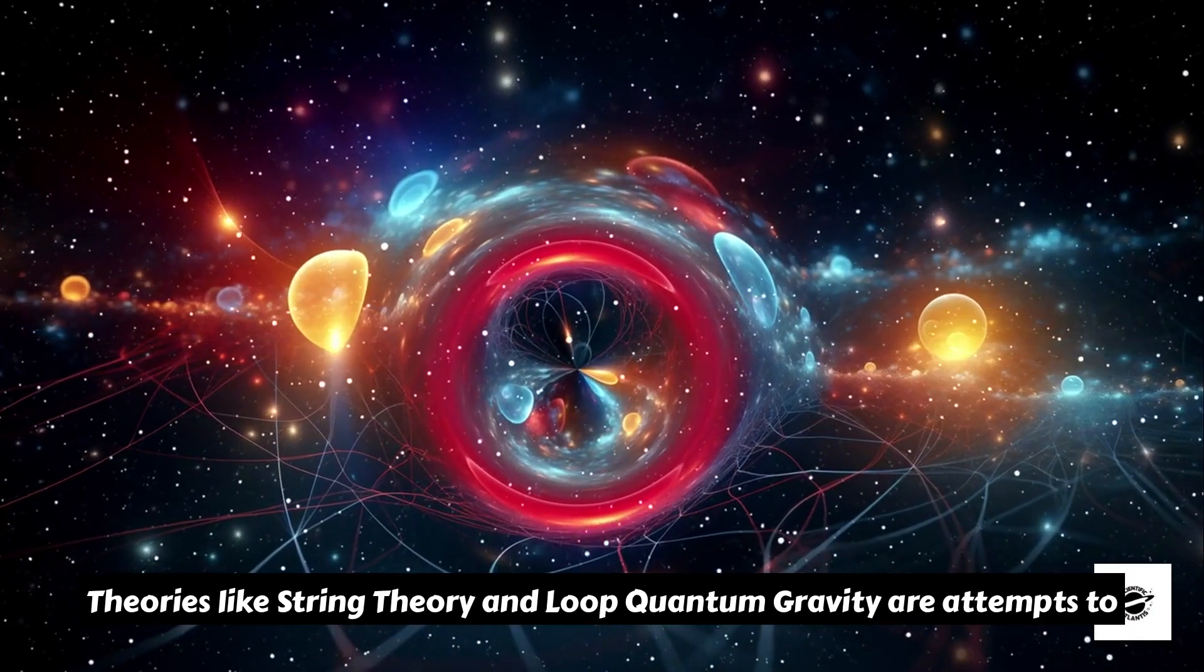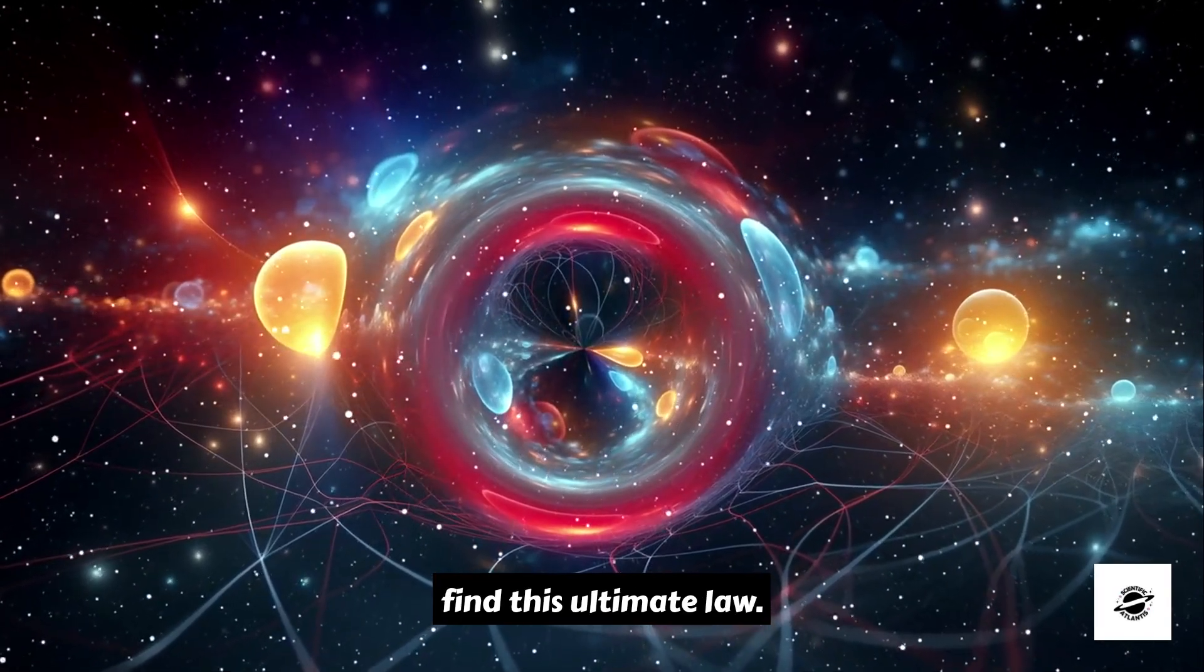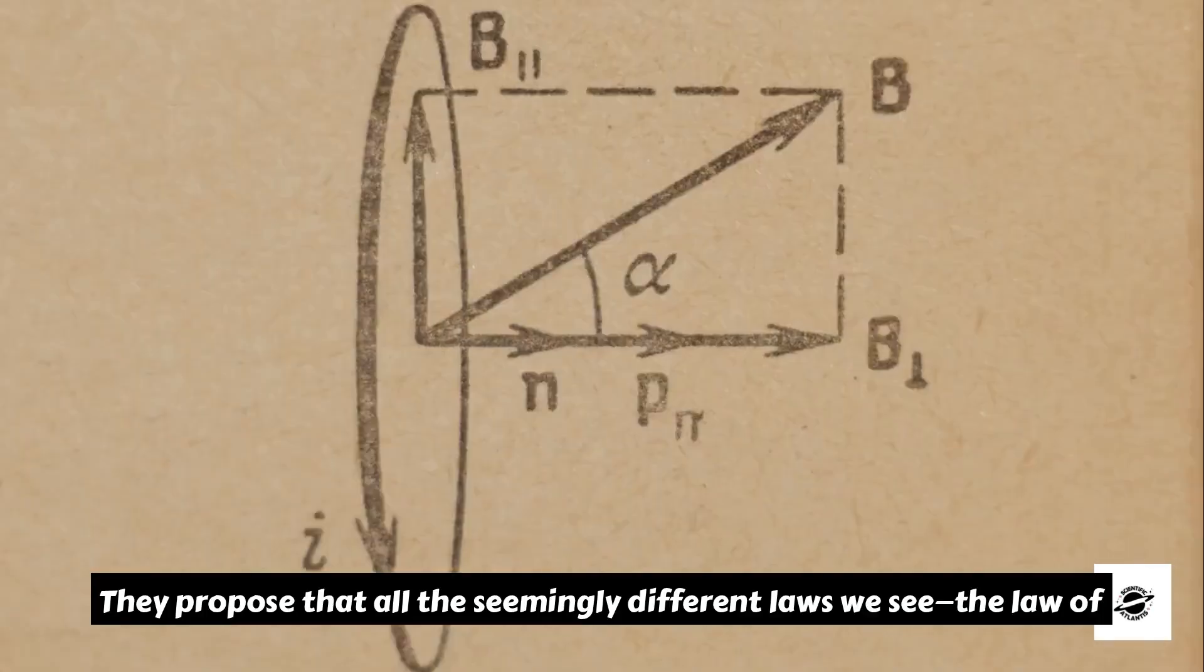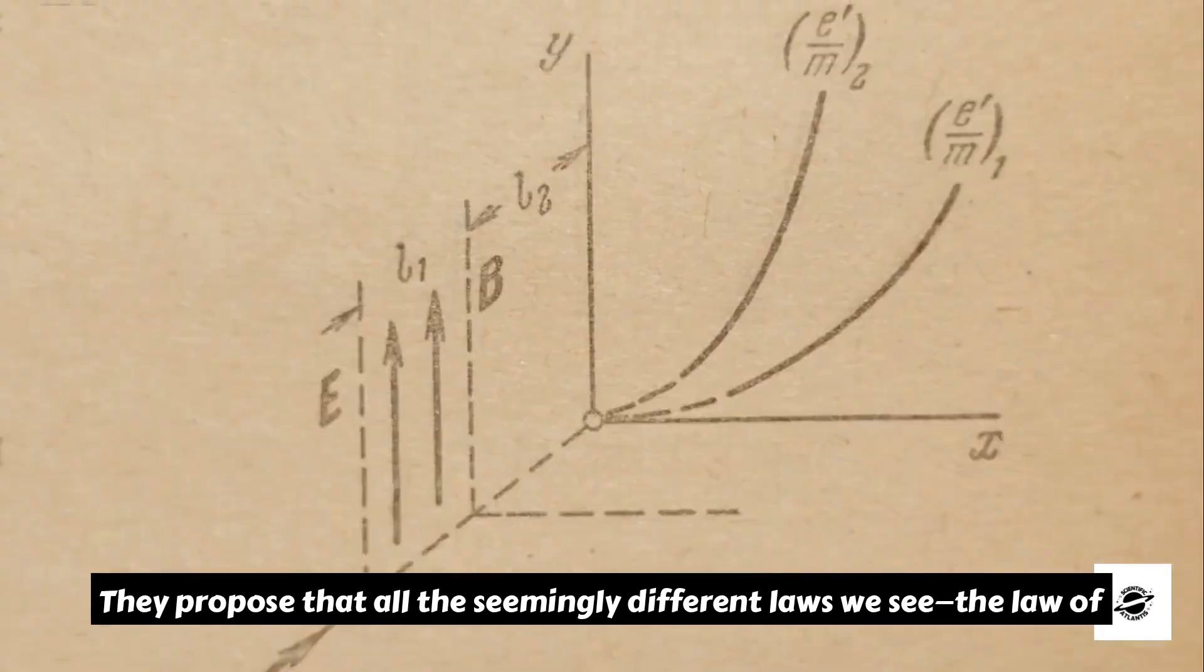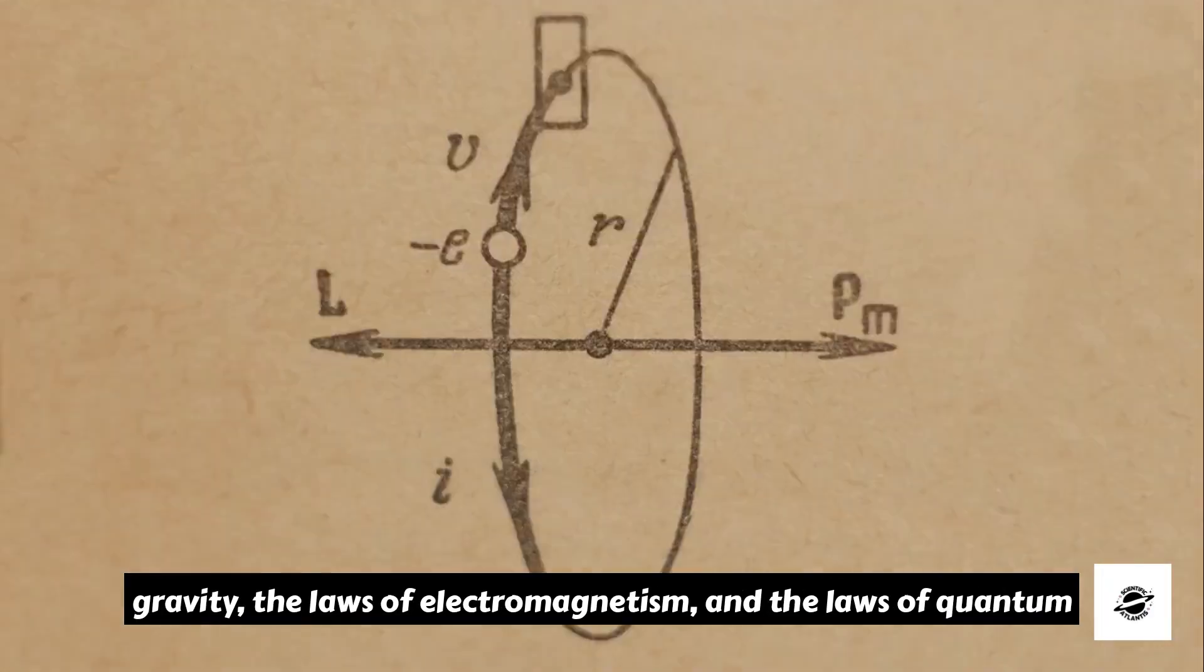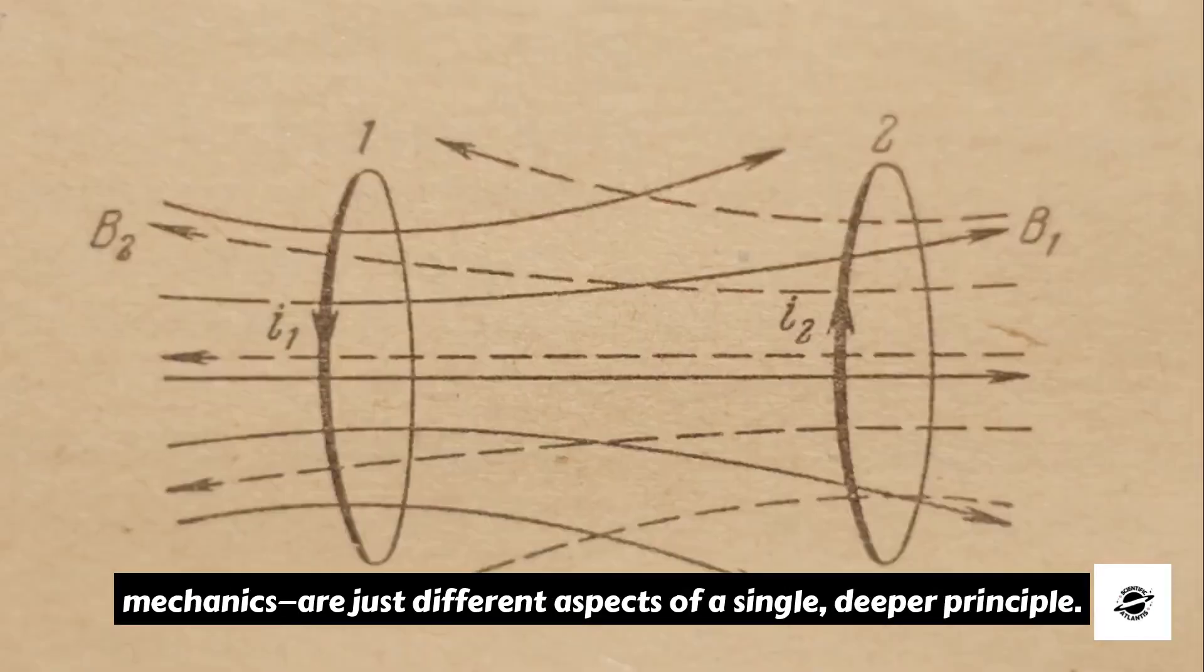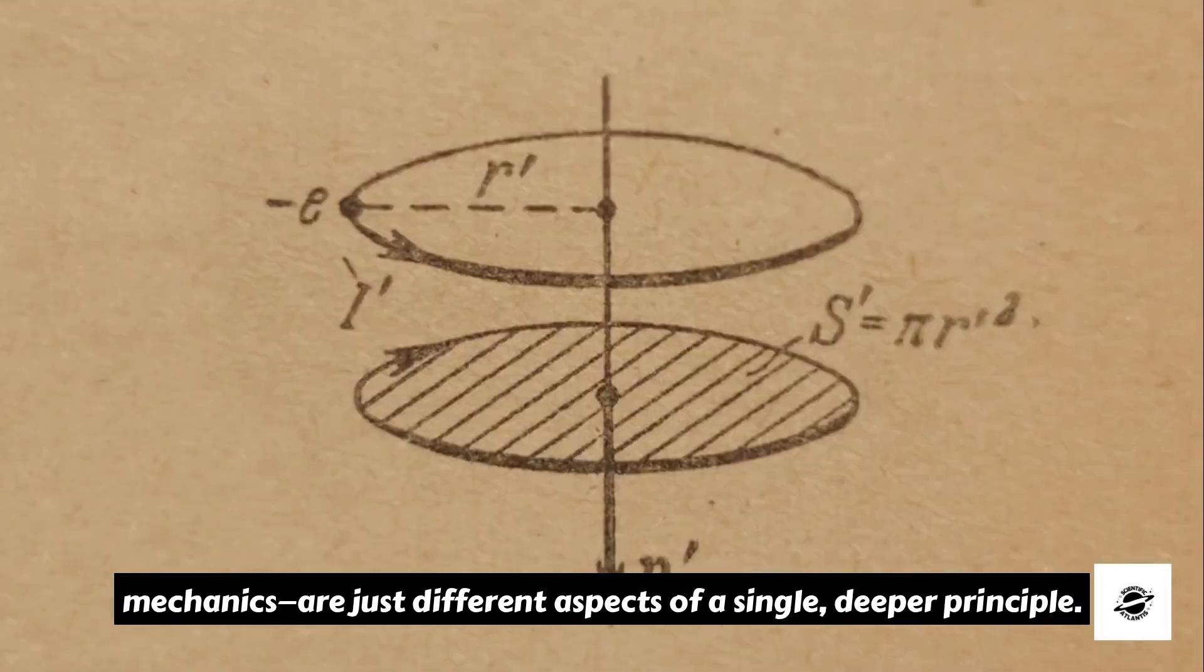Theories like string theory and loop quantum gravity are attempts to find this ultimate law. They propose that all the seemingly different laws we see, the law of gravity, the laws of electromagnetism, and the laws of quantum mechanics, are just different aspects of a single deeper principle.